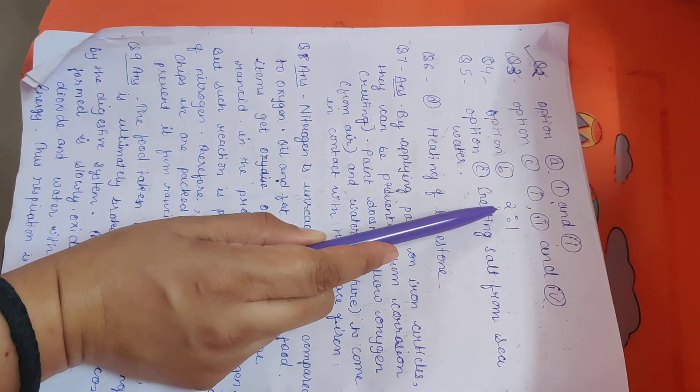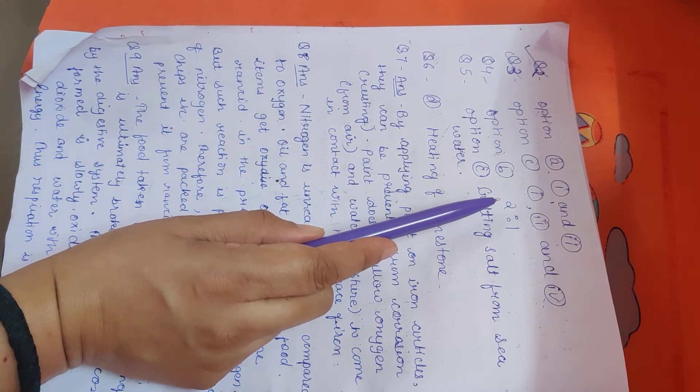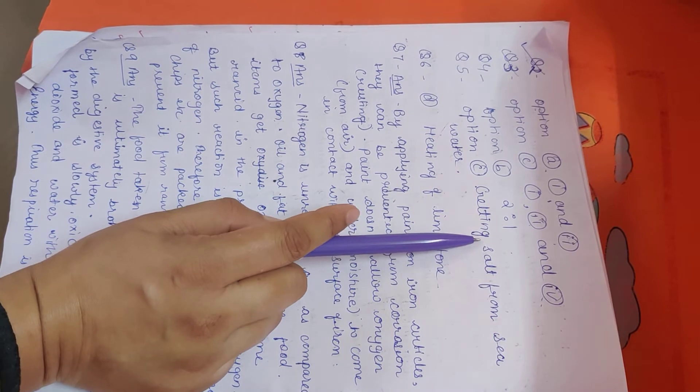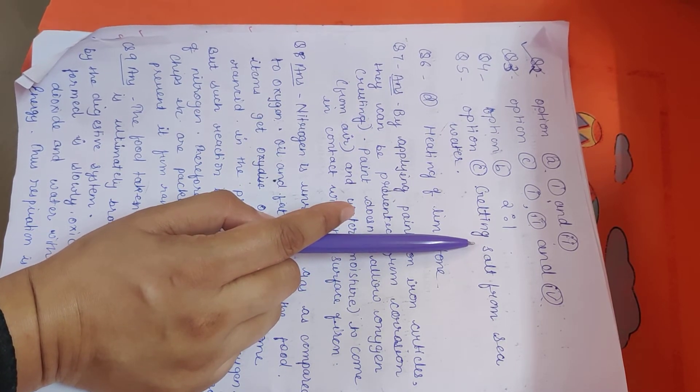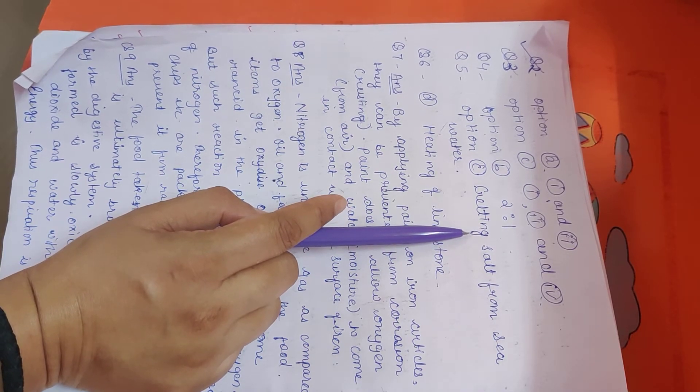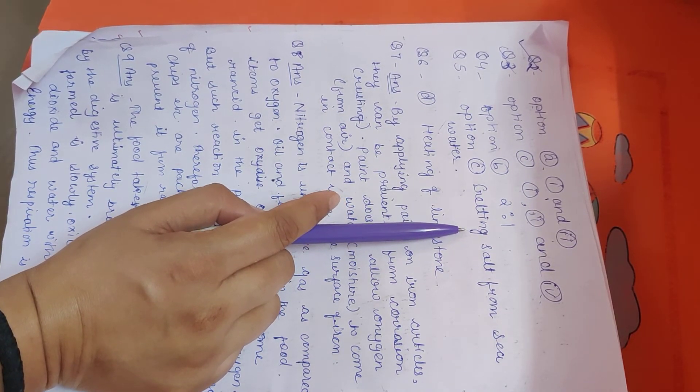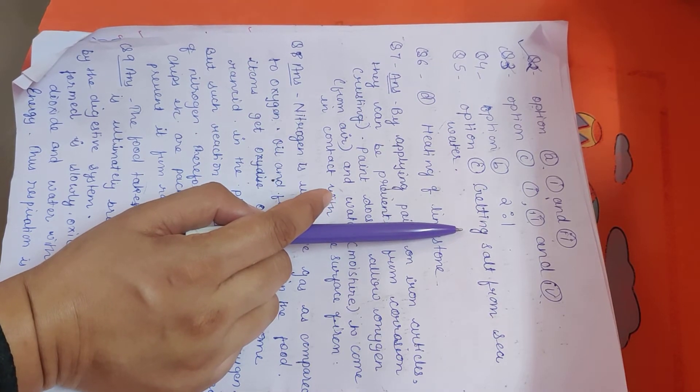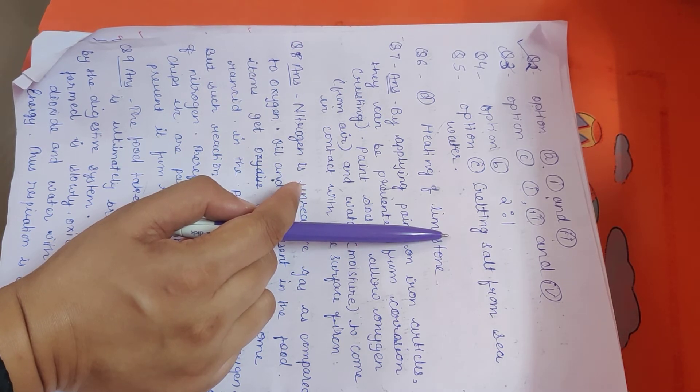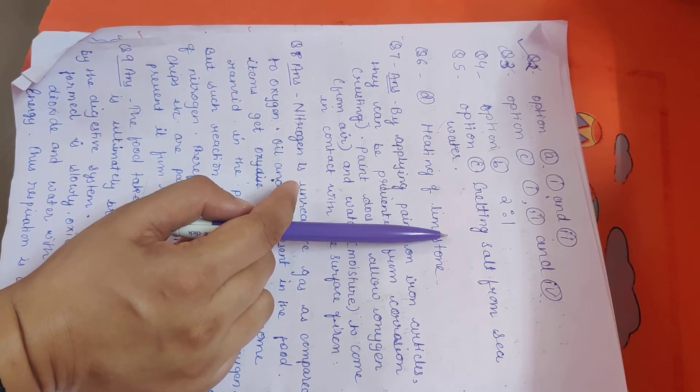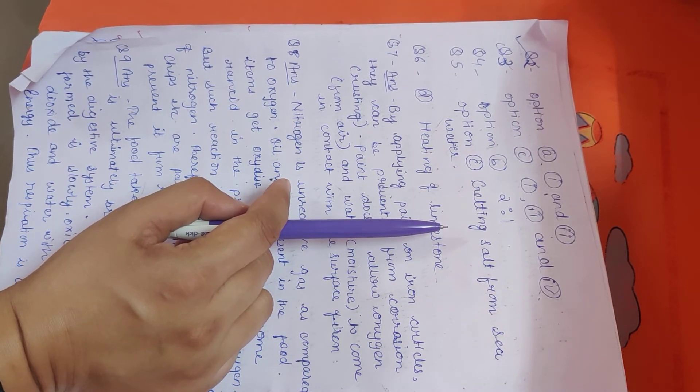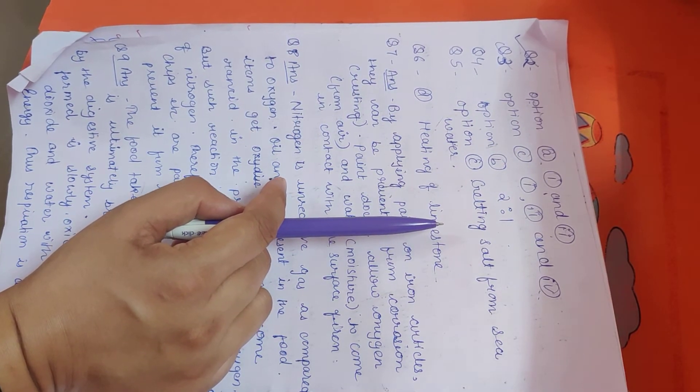Next question is, which of the following is a physical change? You know students, what is a physical change? Which can be reversed, which are reversible changes. So the first option was formation of curd from milk, it is irreversible change, no. Second option is ripening of fruits, that is also irreversible change. Next, getting salt from seawater, yeah, that's a reversible change, so that is a physical change.